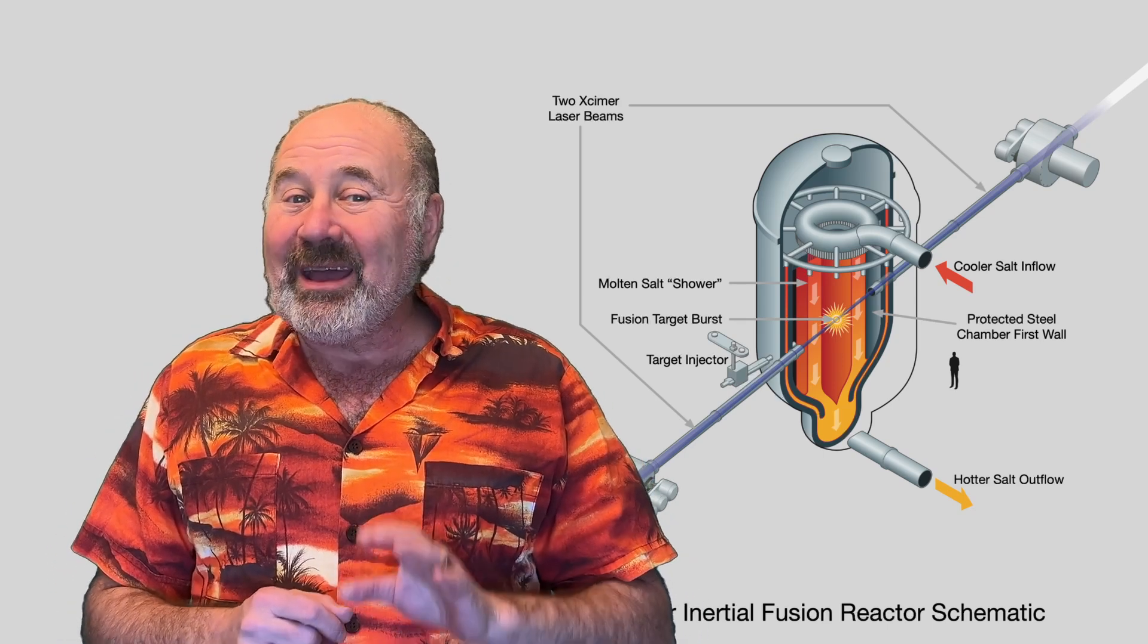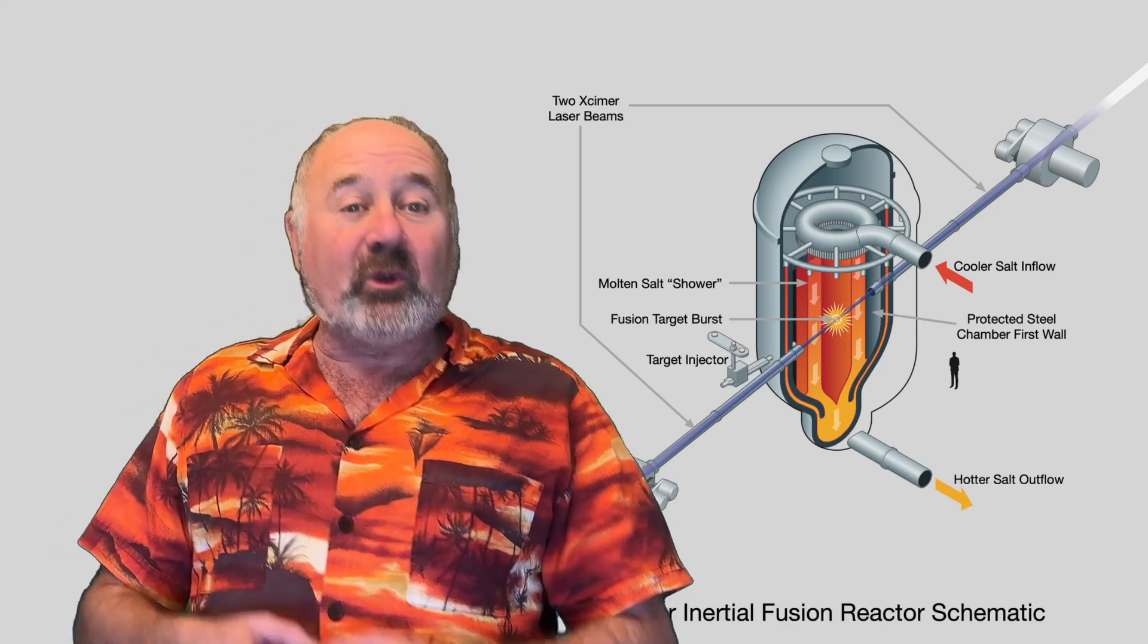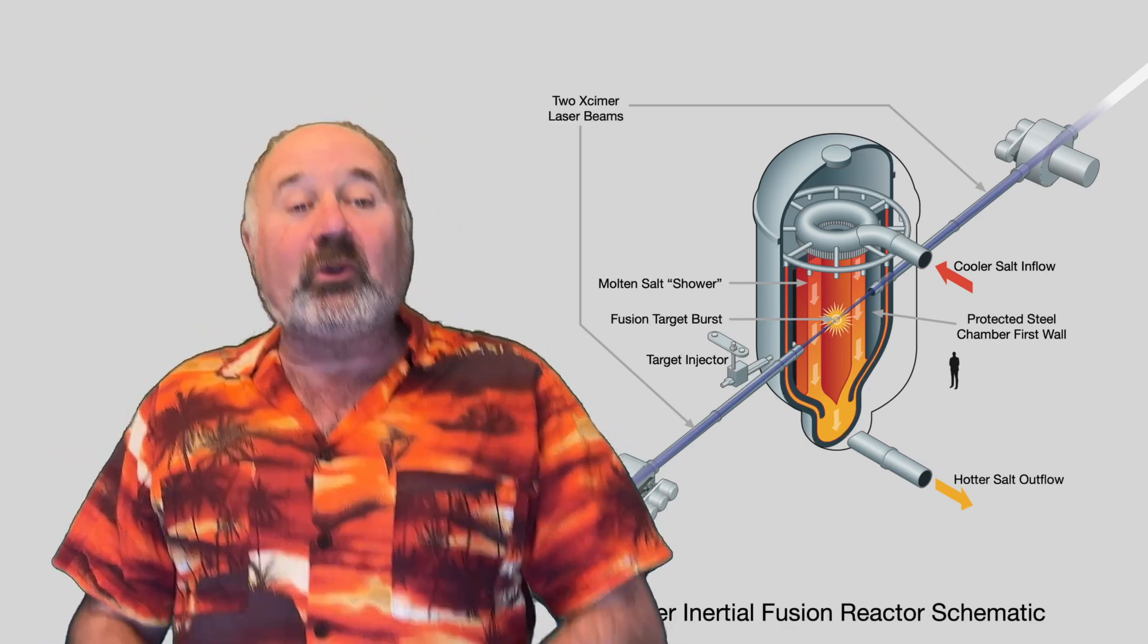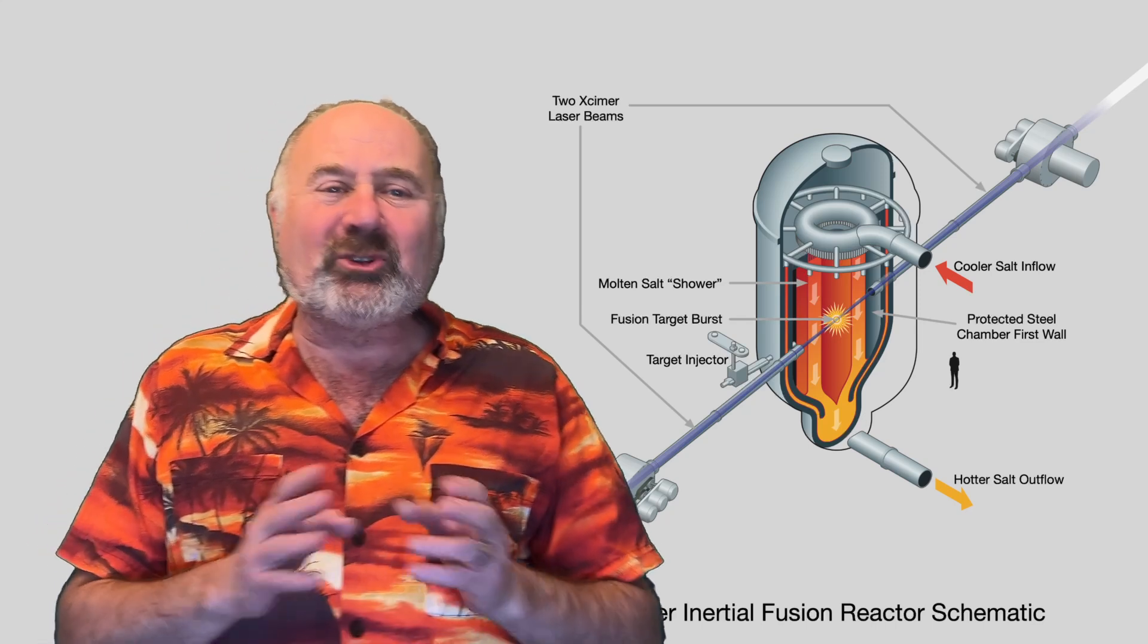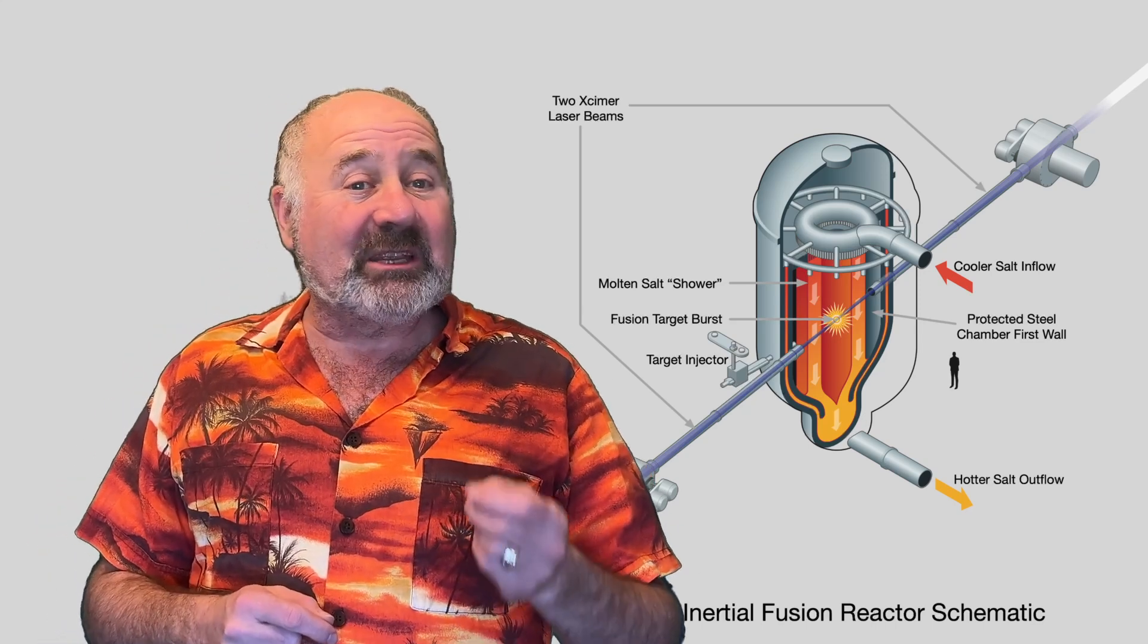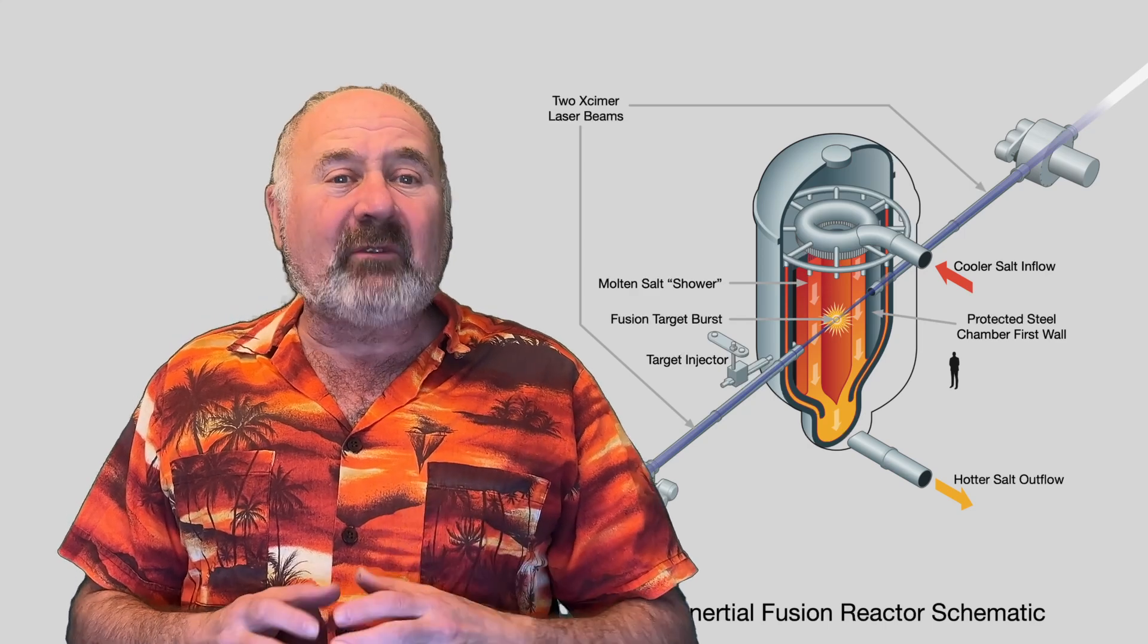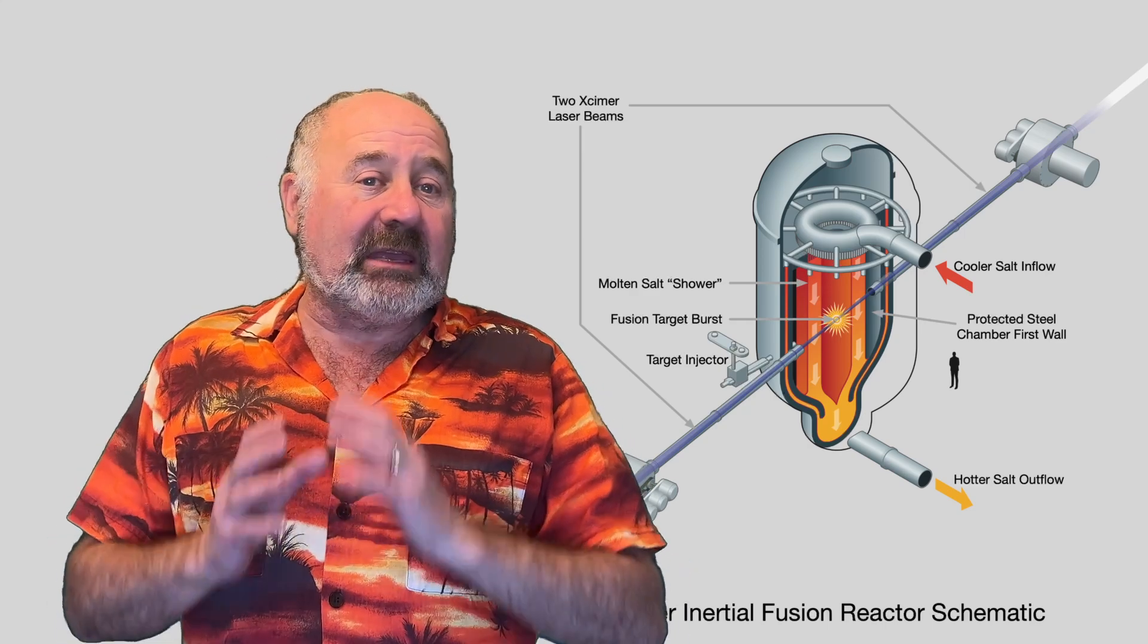Inertial confinement fusion has a challenge in that each pulse generates heat, which is converted into electricity, which is converted into laser light, a drop in efficiency at each step. With 7% efficient lasers, the fusion reaction must have a Q of about 40 just to break even.